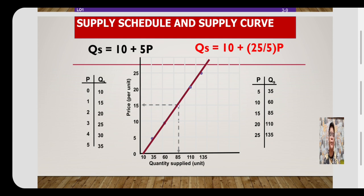Continuing to increase the price by 1 peso: when the price goes from 1 to 2 pesos, quantity supplied increases by 5, so 15 plus 5 equals 20 units. Increasing the price further by 1 peso to 3 pesos per unit, quantity supplied becomes 25 units because the original was 20 and increasing by 5 gives 25. So on and so forth.